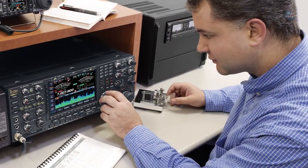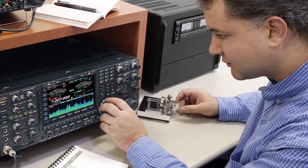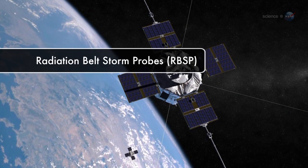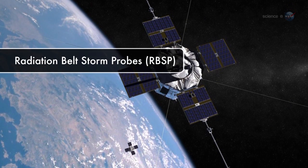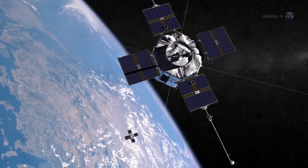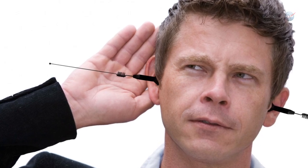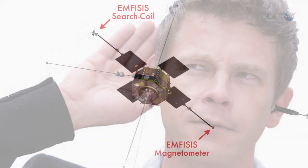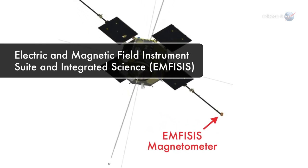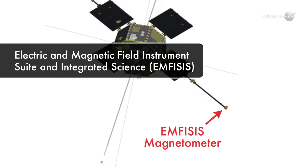For years, HAM radio operators on Earth have been listening to them from afar. Now, NASA's twin radiation belt storm probes are traveling through the region of space where Chorus actually comes from, and the recordings are out of this world. This is what the radiation belts would sound like to a human being if we had radio antennas for ears, says Kletzing, whose team at the University of Iowa built the EMFISIS electric and magnetic field instrument suite and integrated science receiver used to pick up the signals.